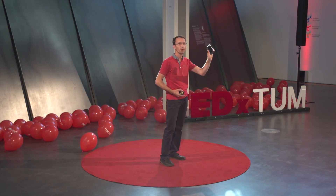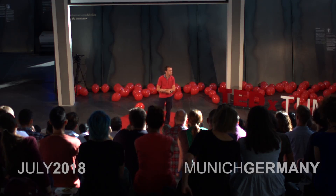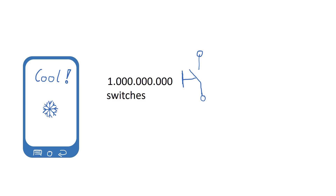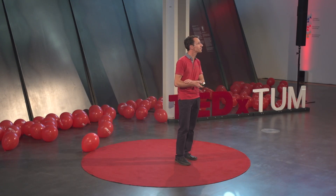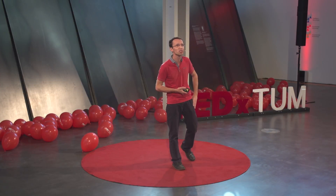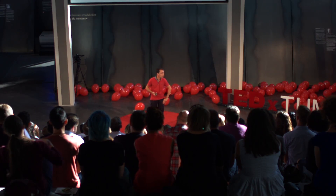Because in your smartphone there are around 1 billion electronic switches, and they like to do computation, they like to work. 1 billion switches in your cool smartphone. But what happens if those 1 billion switches switch 1 billion times a second? Your smartphone gets really hot, and that happens all the time when you don't switch off your smartphone. Your battery is empty, it's heating up a bit.